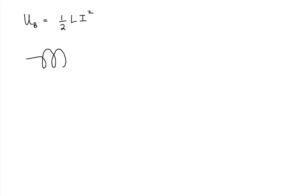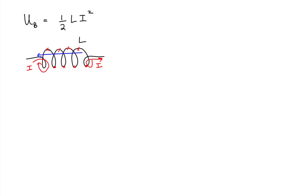Let's say we have an inductor. This inductor has inductance L and a current running through it from left to right. The current is going away from us at the top of the inductor and towards us at the bottom of the inductor. This current establishes a magnetic field going to the left, as we could show by the application of the right-hand rule.